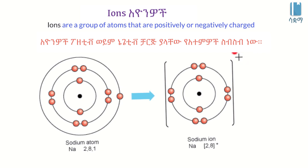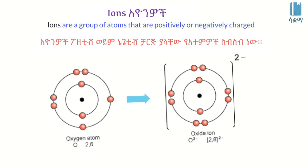Here you will find the balance electron of atoms. The atom has one electron. It is also a negative electron.